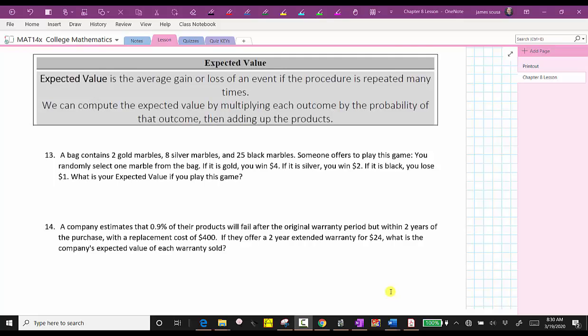Welcome to the third part of our lesson, which is expected value. Expected value is the average gain or loss of an event if the procedure is repeated many times. We can compute the expected value by multiplying each outcome by the probability of that outcome and then adding up the products.